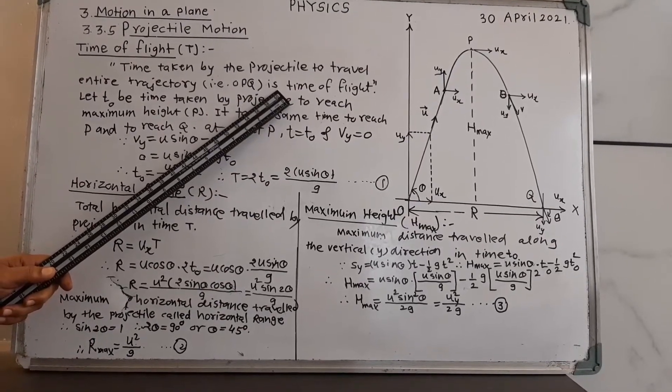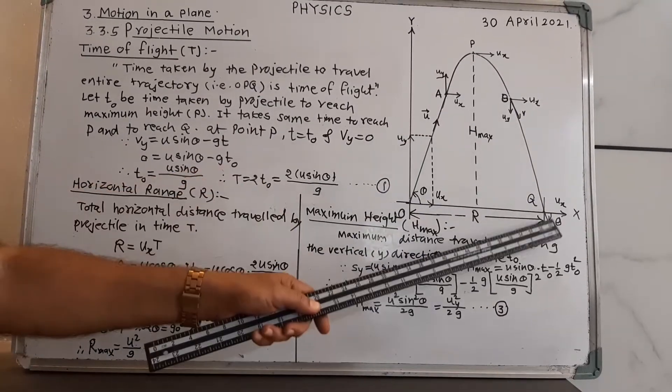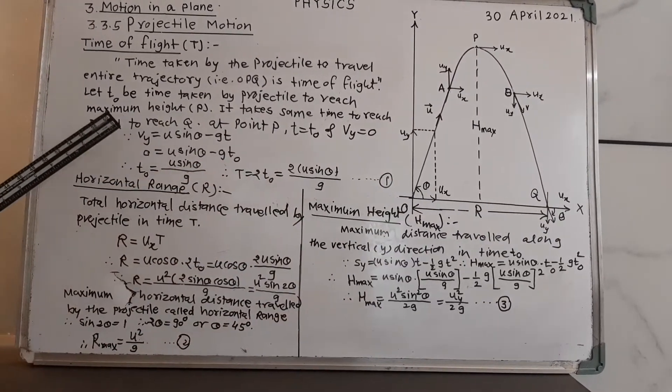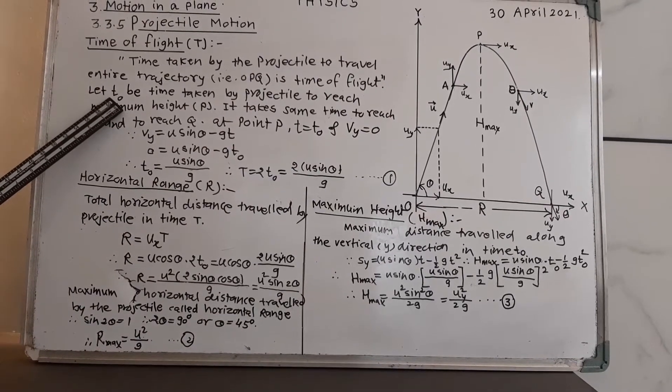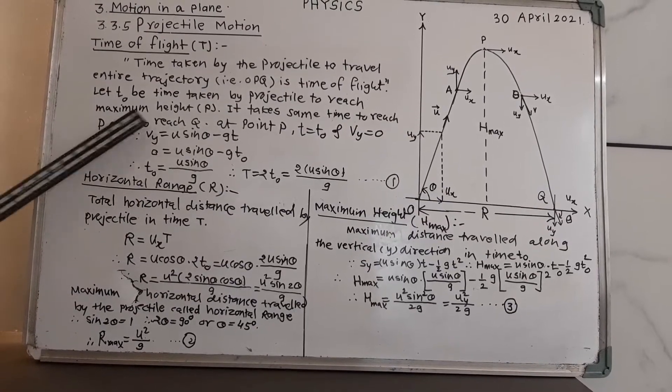Whatever is the time required by the projectile to travel from O to P and then from P to Q is the time of flight. Let T0 be the time taken by the projectile to reach the maximum height P.